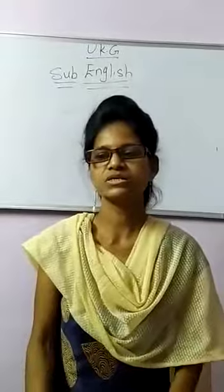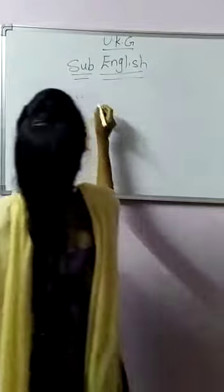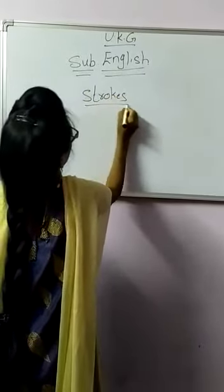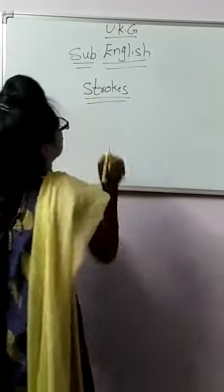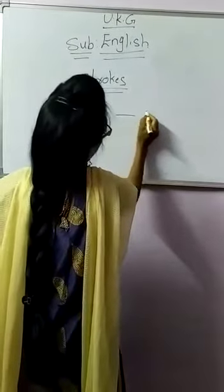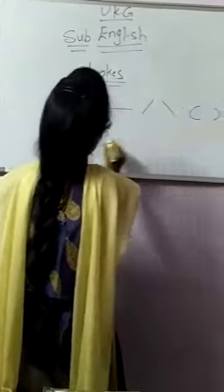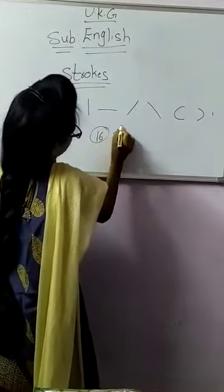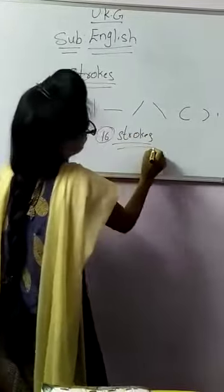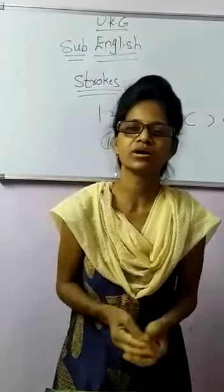What are letters? First we have to know our letters — we have to know about strokes. Does everyone know what strokes are? Strokes: standing line, sleeping line, left standing line, right standing line, curve, left curve. There are a total of 16 strokes. Once we are perfect in these strokes, it is very easy for us to write the letters.